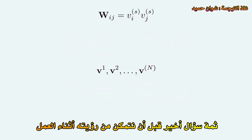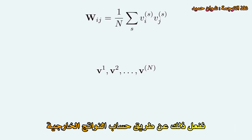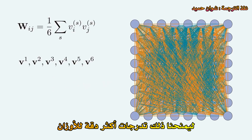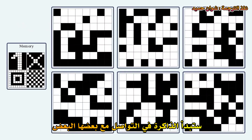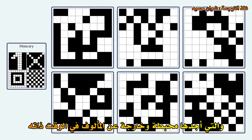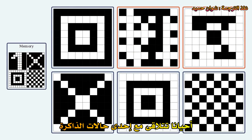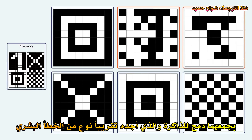One last question: how do we store multiple patterns at once in the same network? We compute the outer products for all desired memory patterns, which gives us a matrix for each, and then we average those matrices. This gives finer and finer gradations of the weights. However, things start to become more complicated — there's no way to guarantee that all memory patterns are stable states. The memories will start talking to each other, fusing into new memories, which I find frustrating and super interesting at the same time. The network sometimes converges to one of the memory states, but in other cases it converges to something in between — a merging of memories, which feels almost like a kind of human mistake.